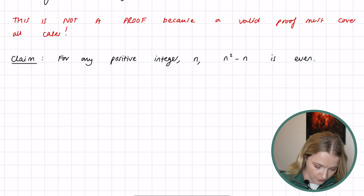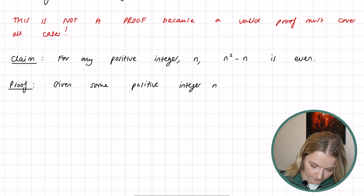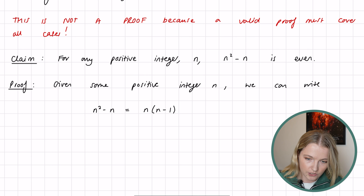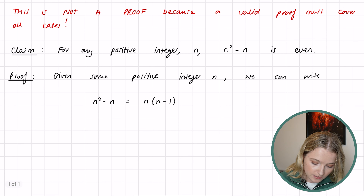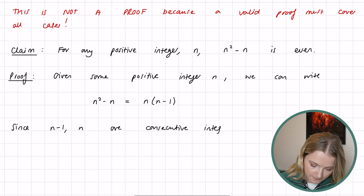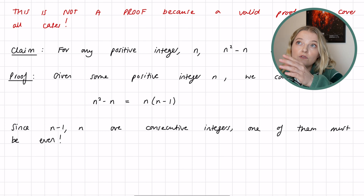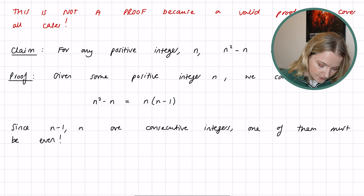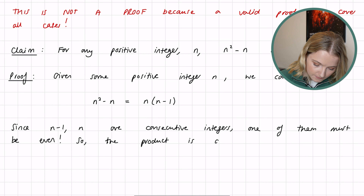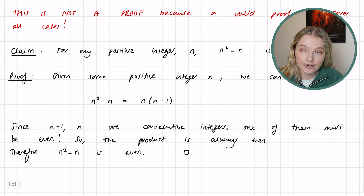So for a better proof: given some positive integer n, we can factorize — n squared minus n is actually just n multiplied by (n minus 1). Since n minus 1 and n are consecutive integers, one of them must be even. Because if you have consecutive integers like 1, 2, 3, 4, 5, one of them is always going to be even. So the product is always even, and therefore n squared minus n is even.